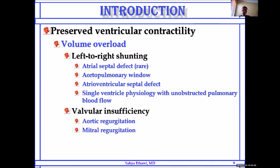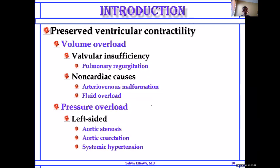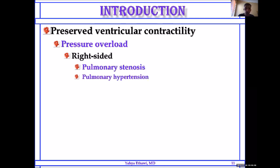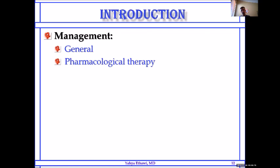Non-cardiac causes of volume overload include arteriovenous malformation in the lung or brain, or excessive fluid administration. There is also pressure overload, especially on the left side, from aortic stenosis, aortic coarctation, interrupted aortic arch, or systemic hypertension. Heart failure can also occur on the right side due to pulmonary stenosis or hypertension. There is also a list of heart failure causes depending on age, which I will not list because today's presentation is about management.